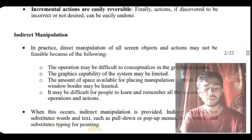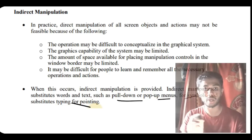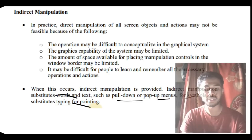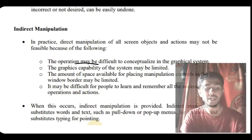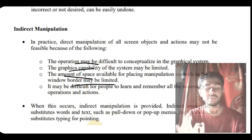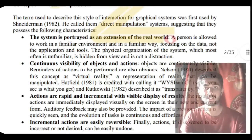For indirect manipulation, instead of pop-up or pull-down menus, symbols are used as substitutes, and pointing substitutes for typing. This is done because operations may become difficult to conceptualize in graphical systems, graphic capability may be limited and take a lot of space, and it may be difficult for people to learn and remember all necessary operations and actions.